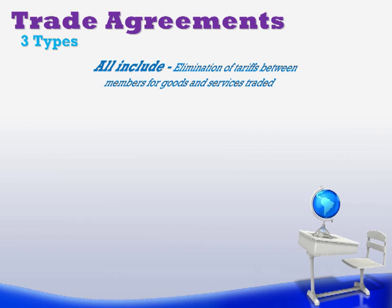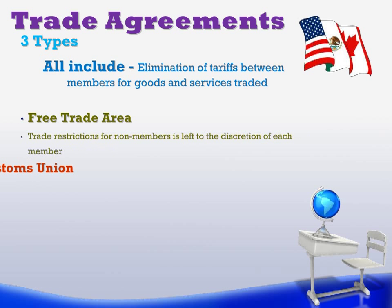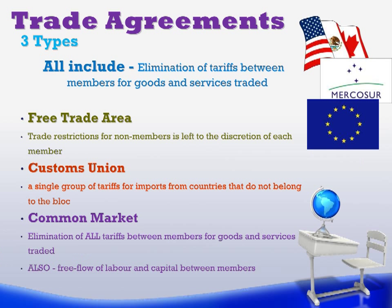There are many free trade agreements all over the world, but no matter which trade agreement they have, they will fall into one of three types. One thing to note: all three types of trade agreements eliminate, or attempt to entirely eliminate, tariffs between members for goods and services. The free trade area is a type where member countries all eliminate tariffs between each other, but if one member wants to create a free trade agreement with a country outside that membership, they can do so without any ramifications within the trade area.